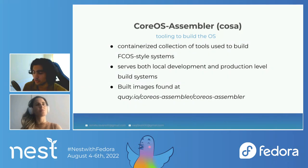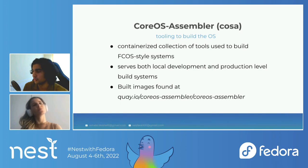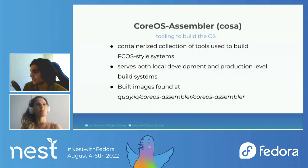Another cool thing about COSA is that it serves both local development use cases and production-level build systems, so the tooling itself is very flexible. And since the tool is containerized, it also makes it easy to get it up and running on different systems. You can find the build images at quay.io/coreos-assembler.